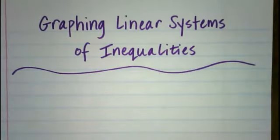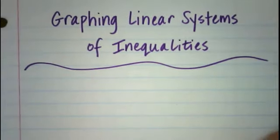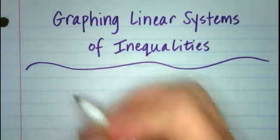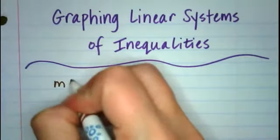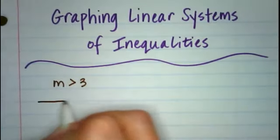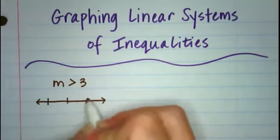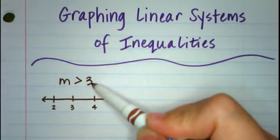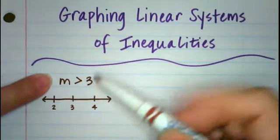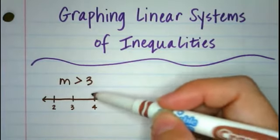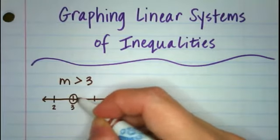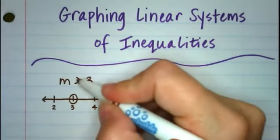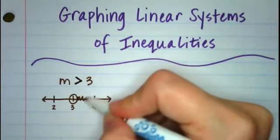So we're going to cover just some basics first before we actually go through and do an example. I want to remind you what you learned — it might have even been in Math 7 or 6. If you have an inequality, say M is greater than 3, and you would graph this on a number line, you would look at the 3 and use an open dot to show that it didn't include 3, but it could be anything greater than 3, which would be shaded this way.